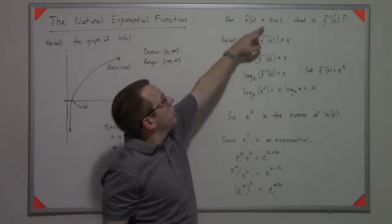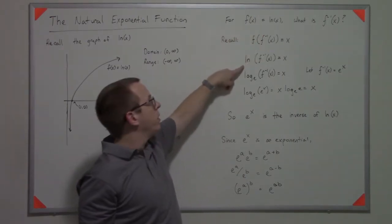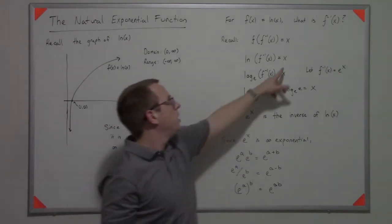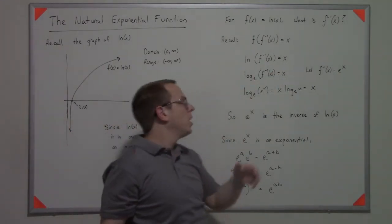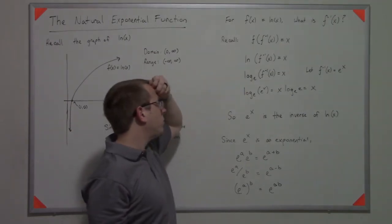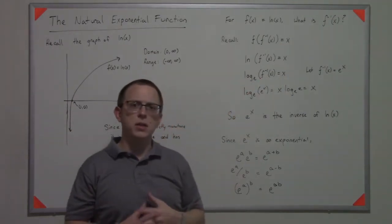Well, if our original function is the natural log, then another way to rewrite this is natural log of some inverse, some unknown inverse, is equal to x. But another thing to realize is that the natural log is log base e, and that that thing is equal to x.